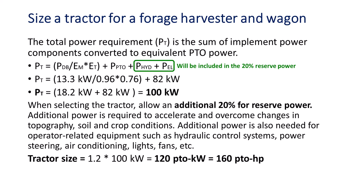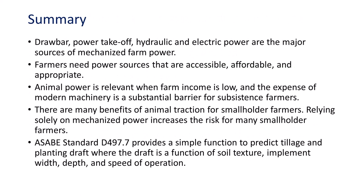The tractor size is calculated as 1.2 times 100 kW, equaling 120 PTO kW or 160 PTO horsepower. In the conditions described, a 120 PTO kW mechanical front-wheel drive tractor is a good match for the three-row forage chopper and forage wagon. Drawbar, power takeoff, hydraulic, and electric power are the major sources of mechanized farm power. Farmers need farm power that is accessible, affordable, and appropriate.